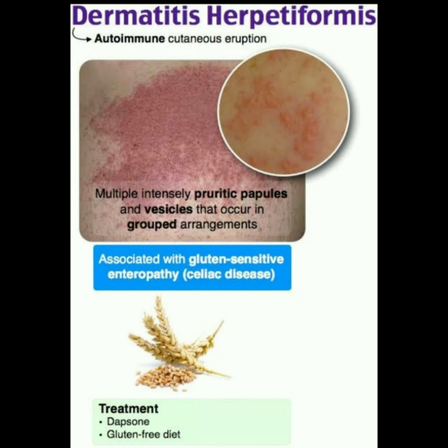In summary, dermatitis herpetiformis — another name is autoimmune cutaneous eruption — presents with multiple intensely pruritic papules and vesicles and is associated with gluten-sensitive enteropathy and celiac disease. Treatment is dapsone and a gluten-free diet. Thank you very much everyone; please subscribe and share the channel.